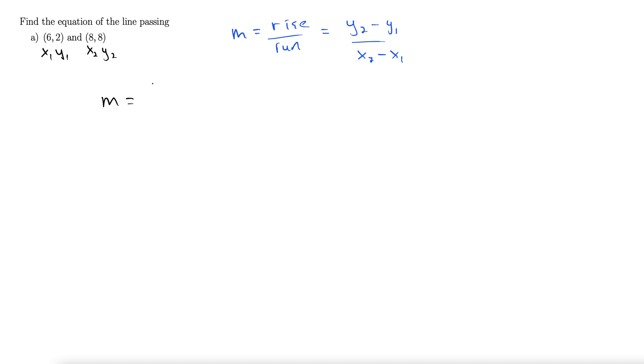Y2 minus y1, 8 minus 2, I'm just plugging in these points, x2 minus x1, 8 minus 6. That gives us 6 over 2, which is 3.